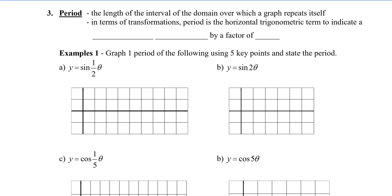The period is the length of the interval of the domain over which the graph repeats itself — that means what's the distance that the graph needs to travel to repeat. In terms of transformations, the period is the horizontal trigonometric term indicating a horizontal stretch by a factor of 1 over the absolute value of b, ignoring any reflections.